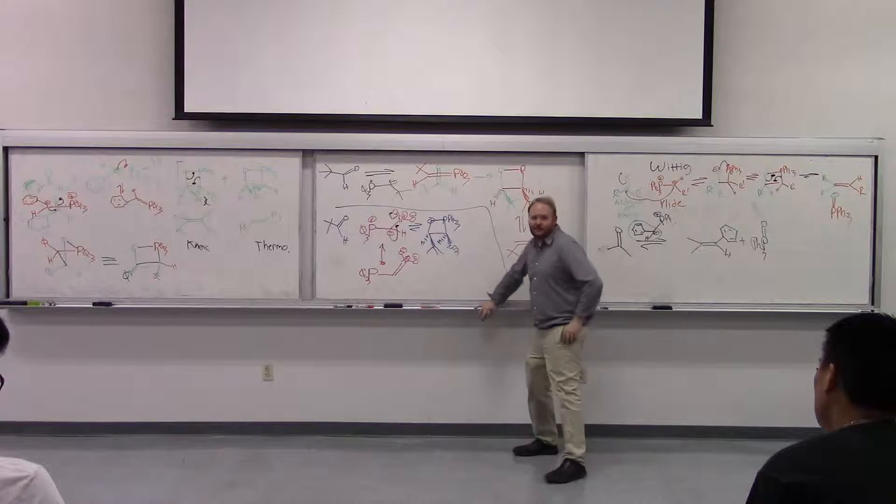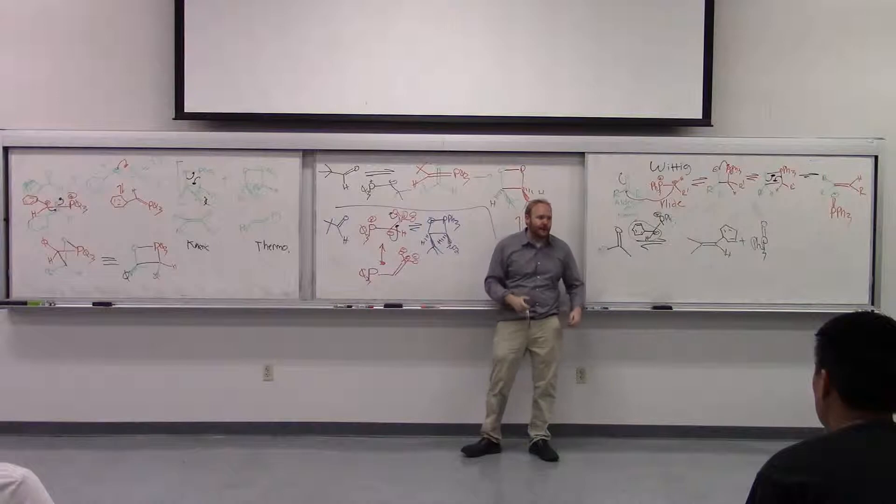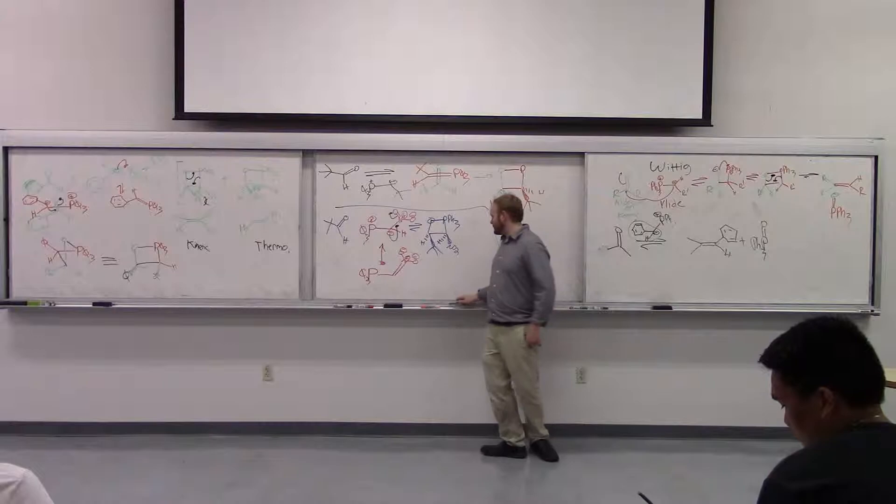So what does that mean? Well, that means, whereas in this case, at normal conditions, we will not get equilibration and it will just go forward and not be as reversible. Since this, with the electron withdrawing group, is much more stable, now under the conditions, we can go backwards.